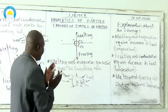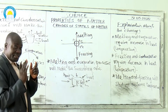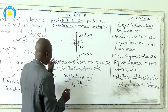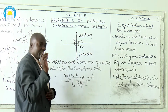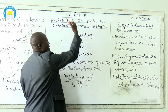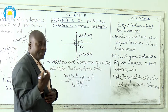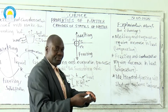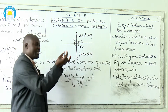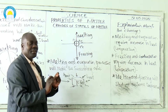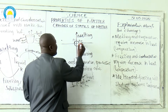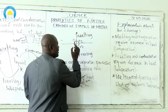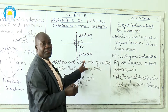Likewise, if you have something like water — a liquid above zero degrees — and you place it in a fridge, that water will start changing its temperature down and down. When it reaches zero degrees coming downwards, that process is what you call freezing.